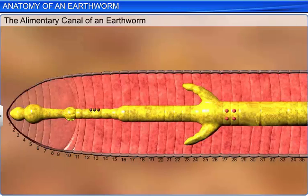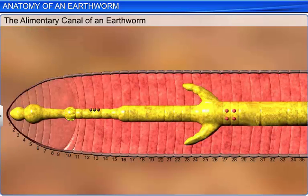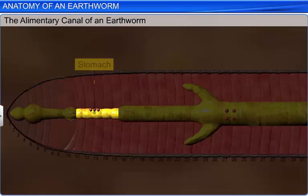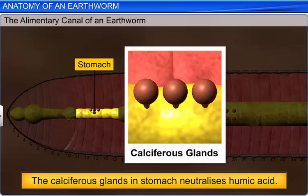The gizzard, located in the eighth and ninth segments, helps grind soil particles and organic matter. This organic matter is mixed with soil and is digested in the stomach that lies between the ninth and 14th segments. The stomach also has calciferous glands, which neutralize the humic acid present in the partially decomposed organic matter.